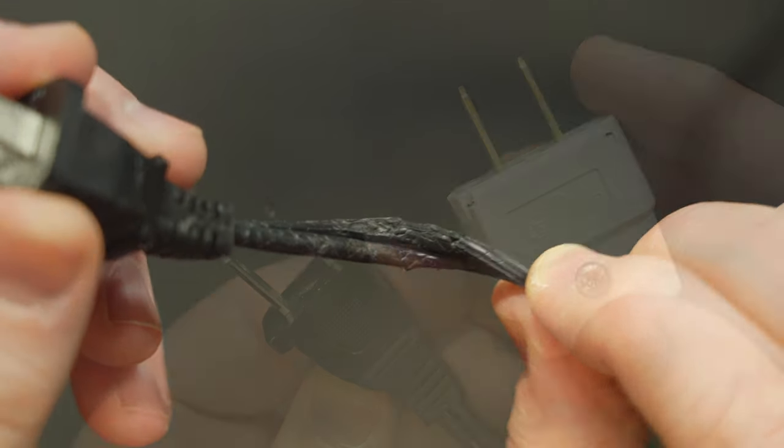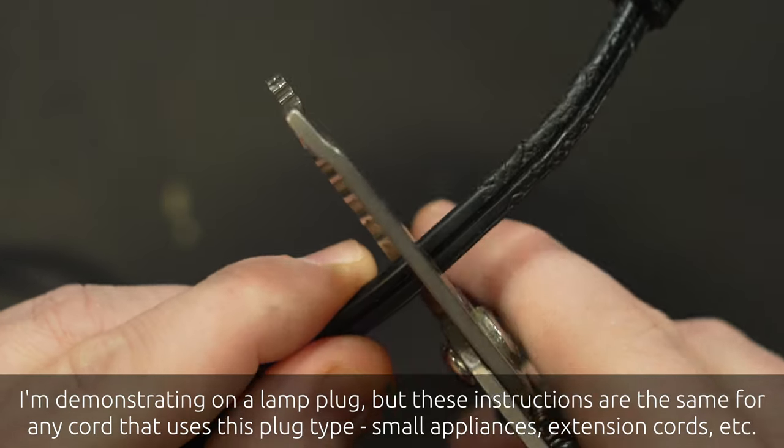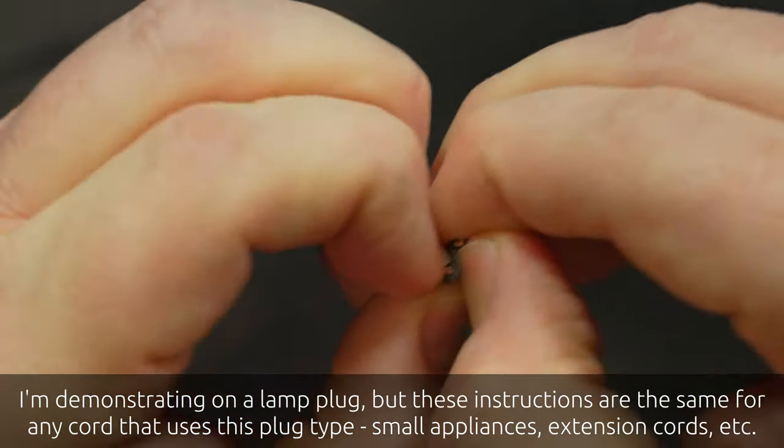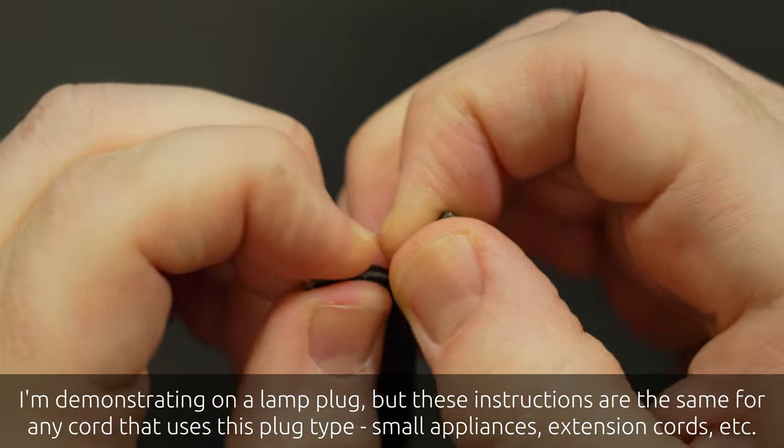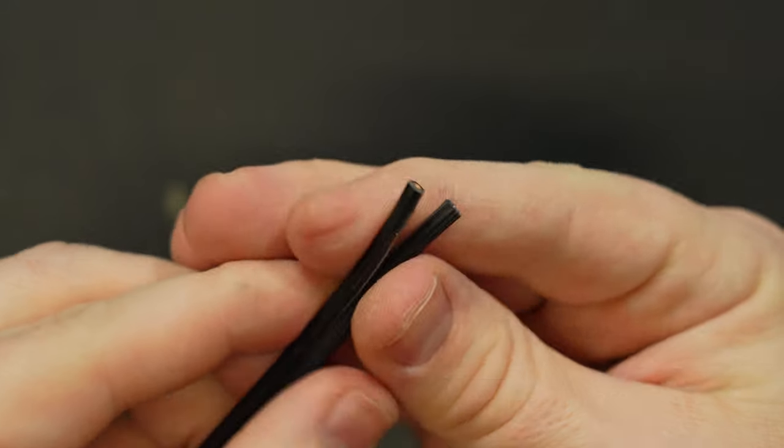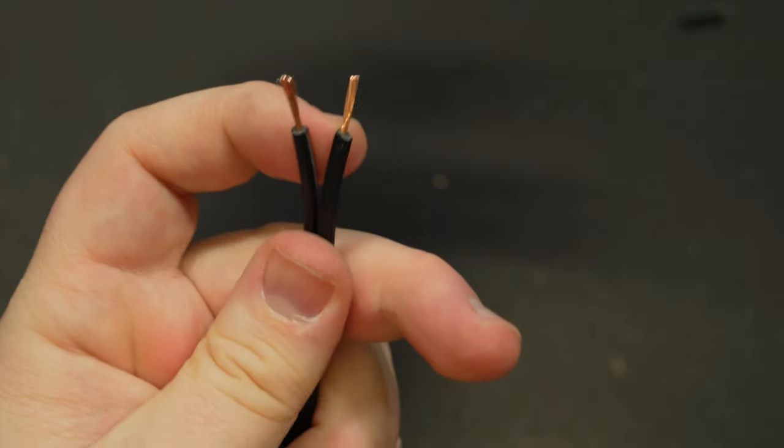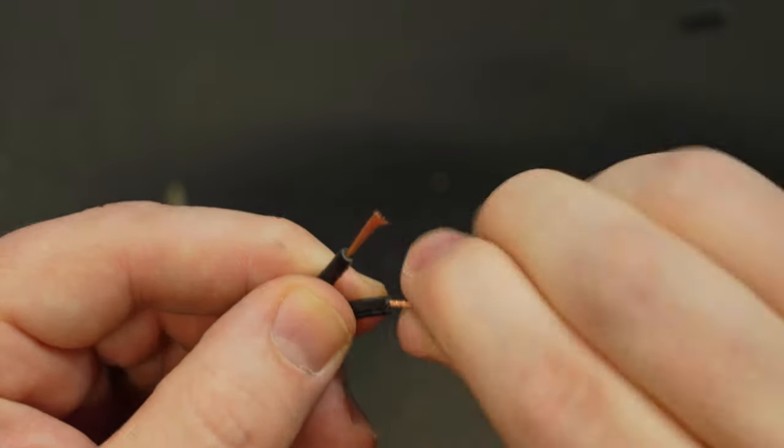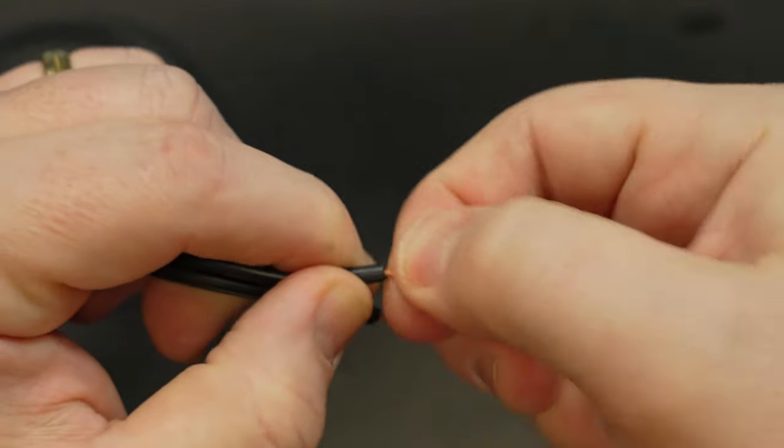After verifying that I'm using the correct replacement plug type I'll start by cutting off the old plug including any damaged area. Then simply pull the two conductors apart with my fingers making sure that I don't separate them too far down the wire as I only need about an inch and a half or so. Next with my wire strippers I'm going to remove about a half inch or so of the insulation around the conductor. Then I like to twist the fine strands of copper together as that will help the wire stay nice and tidy in the next steps.